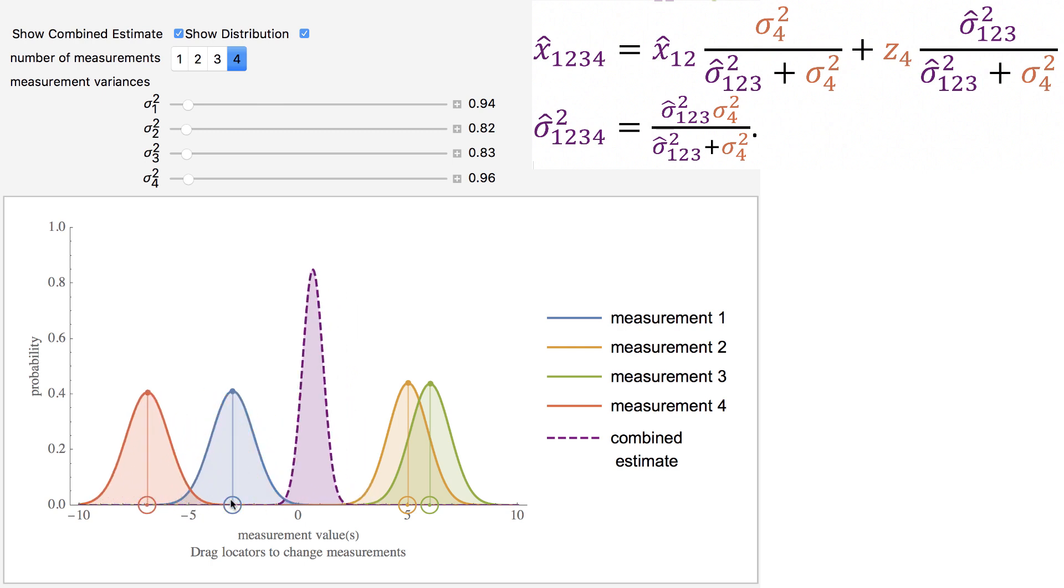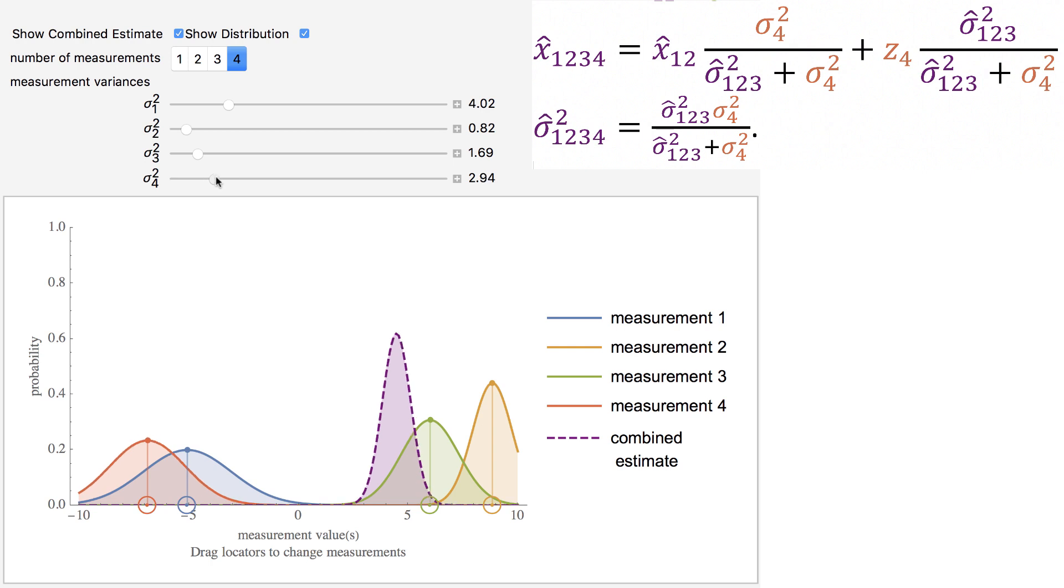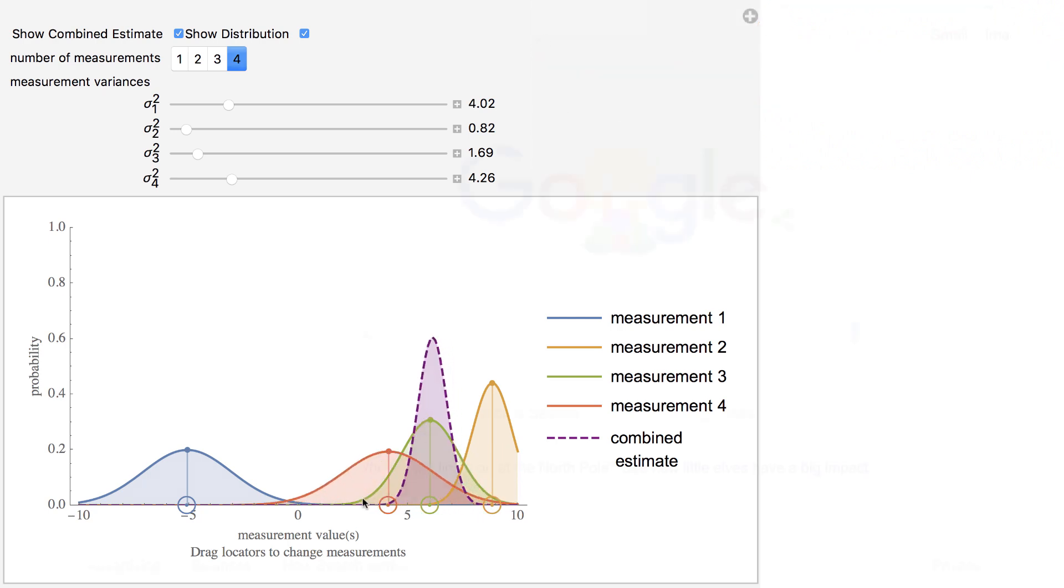One cool result is that at each stage, the combined standard deviation gets smaller and smaller. As long as each sensor measurement is corrupted by an independent noise source, additional measurements give more information about the true value.